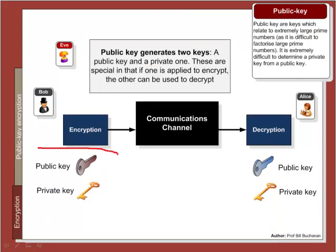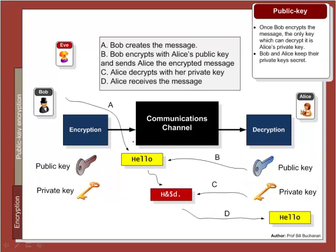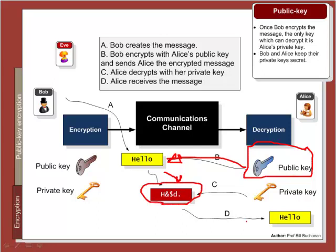It works as follows: we generate a public and private key pair — which can take quite a while to generate. Either side has a public and a private key; one is used to encrypt and the other to decrypt. When Bob sends a message to Alice, he gets Alice's public key and uses it to encrypt the message. The only key that can now decrypt it is Alice's private key. Eve should not be able to decrypt it. Alice then uses her private key to decrypt the message, keeping the communications secure.